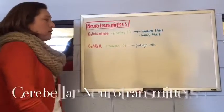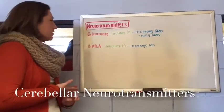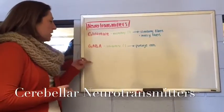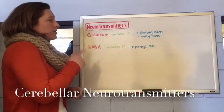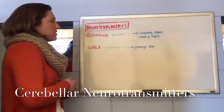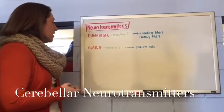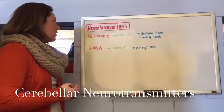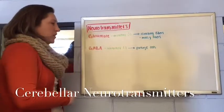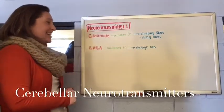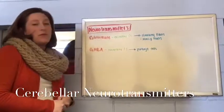Within the cerebellar pathways, there are two different types of neurotransmitters: glutamate and GABA. Glutamate is associated with the climbing fibers and mossy fibers, and it is excitatory. GABA is associated with the Purkinje cells, and it is inhibitory.